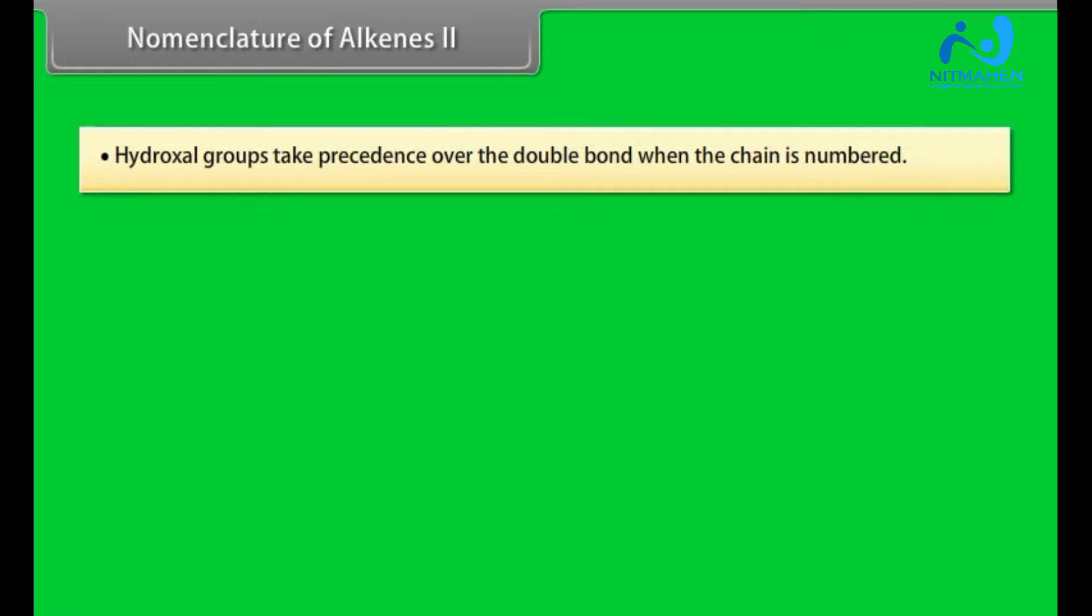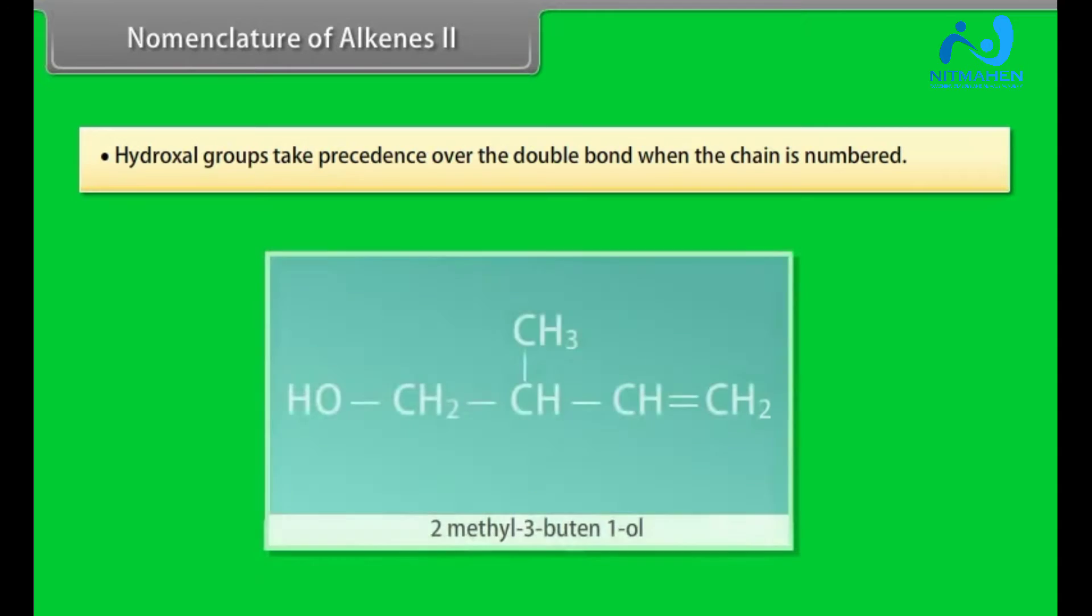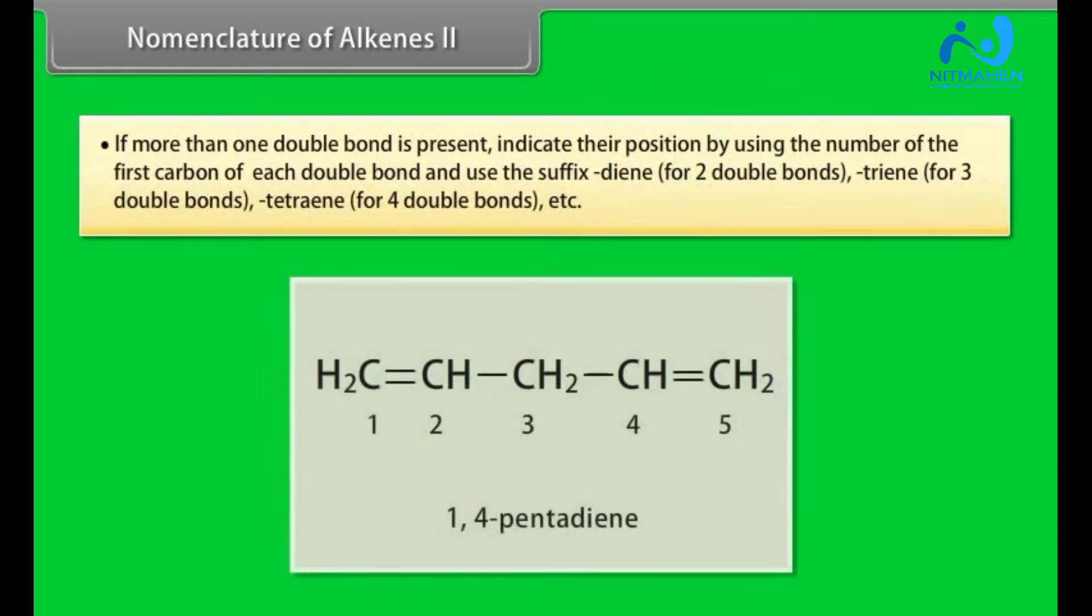Step 7: Hydroxyl groups takes precedence over the double bond when the chain is numbered. This compound is 2-methyl-3-butene-1-ol. Step 8: If more than one double bond is present, indicate their position by using the number of the first carbon of each double bond and use the suffix -diene for two double bonds, -triene for three double bonds, -tetraene for four double bonds, etc. For example, 1,4-pentadiene.